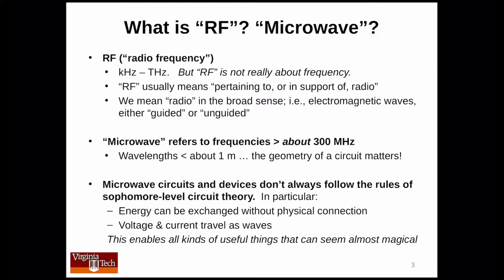However, RF and microwave engineers know all about these behaviors, and furthermore they know how to exploit them to do some truly amazing things. Microwave circuits and devices don't always follow the rules of sophomore-level circuit theory. For example, energy can be exchanged without physical connection — we can send signals between antennas without connecting them with wires. Also, voltage and current signals travel as waves. So these behaviors enable all kinds of useful things, and they can seem almost magical.